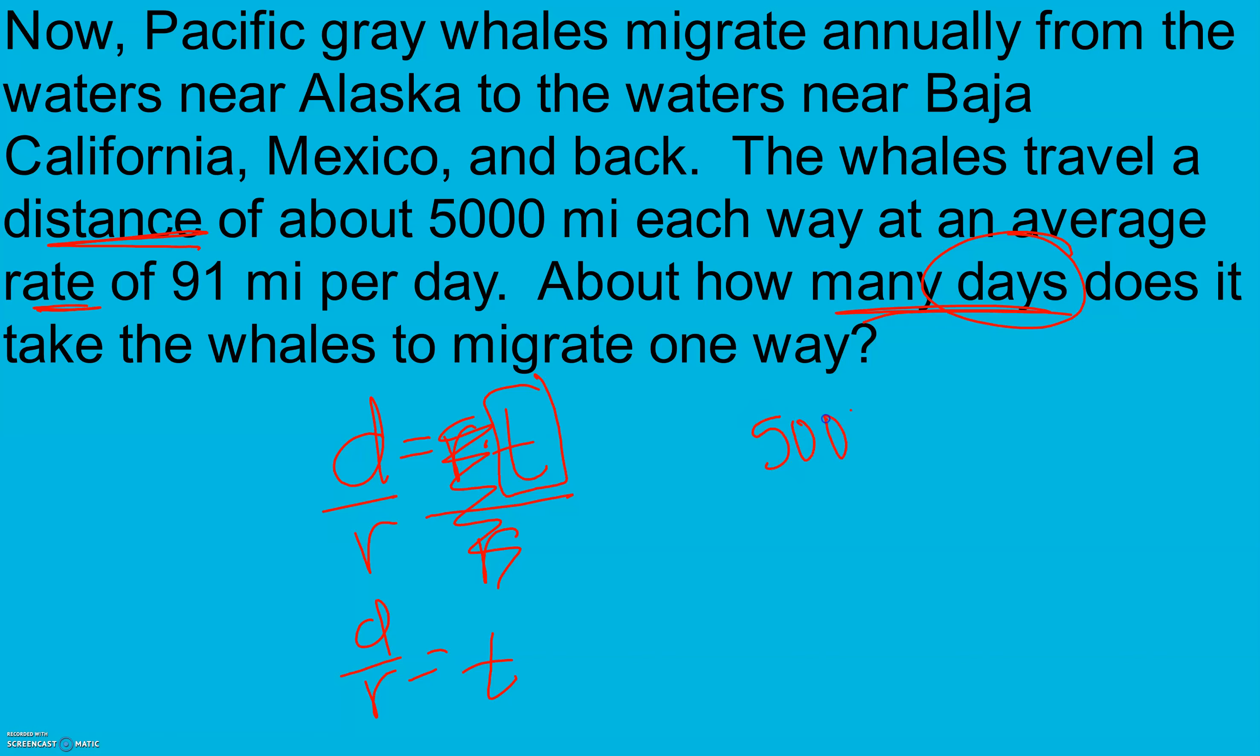Distance here is 5,000 miles. And our rate is 91 miles per day. So when we divide here to get our time, I get approximately 54.94549 to be T.